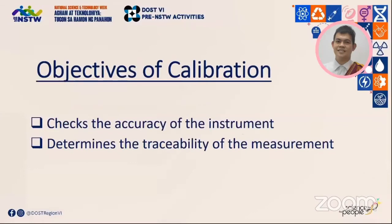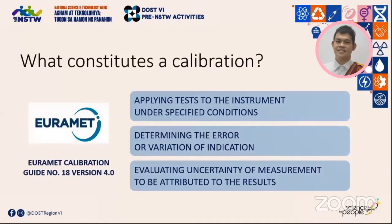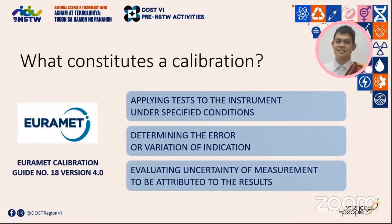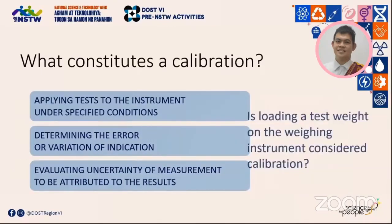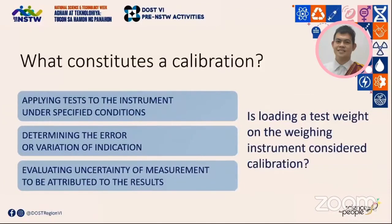In order for a process to be considered a calibration, the following must be met: the first is the application of tests to the instrument under specified conditions; the second is the determination of the error or variation of indication; and the third is the evaluation of uncertainty of measurement to be attributed to the results. With this in mind, simply loading a test weight on a weighing instrument is not considered a calibration, as only one of these conditions is met.